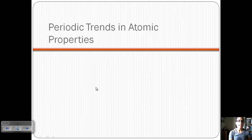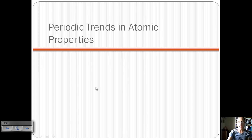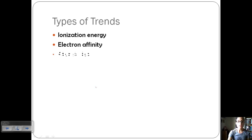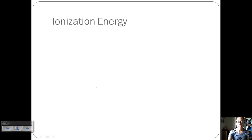We are going to talk about the last section of our atomic structure and periodicity unit, talking about periodic trends. There are three main types of trends that we're going to discuss: ionization energy, electron affinity, and atomic size.